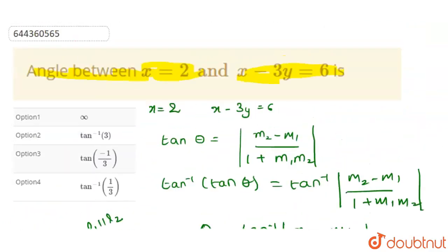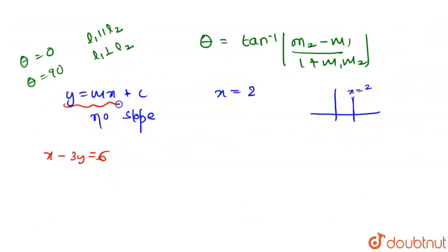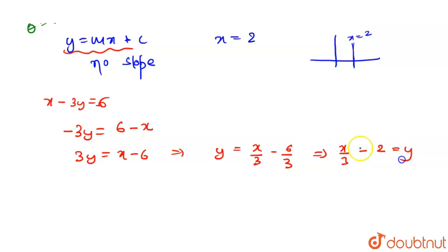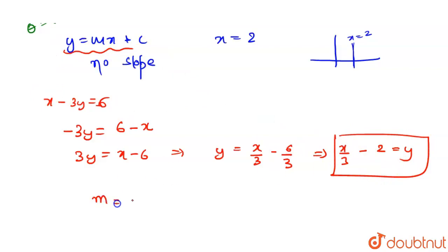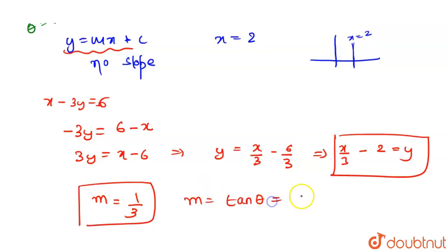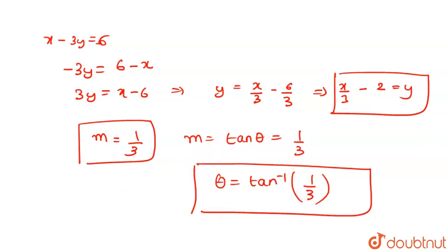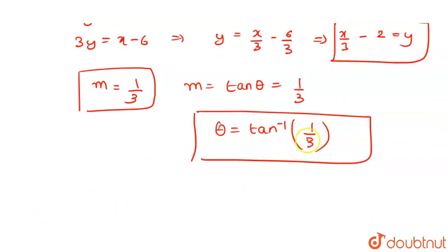Let me work out x - 3y = 6. Rearranging: -3y = x - 6, so y = x/3 - 2. Comparing with the general equation y = mx + c, the slope m = 1/3. Since m = tan θ, we get θ = tan⁻¹(1/3). So the second line has slope 1/3.